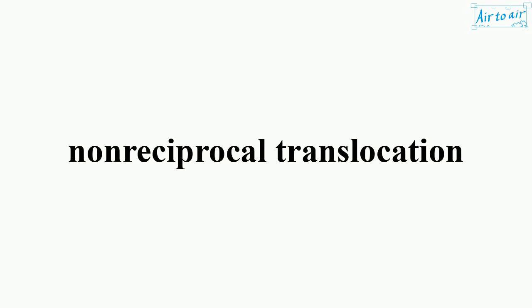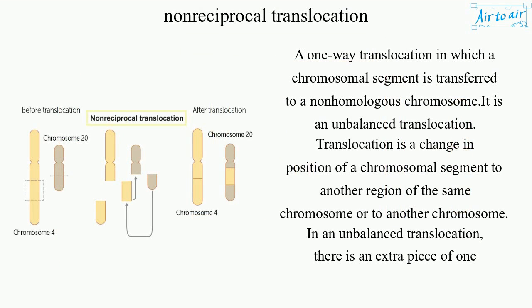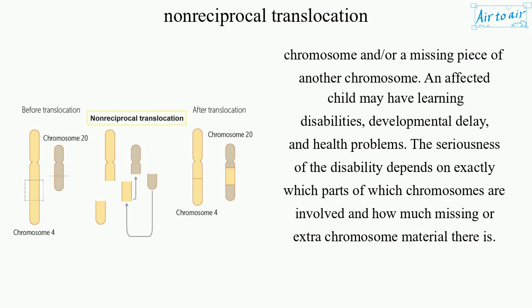Non-reciprocal translocation is a one-way translocation in which a chromosomal segment is transferred to a non-homologous chromosome. It is an unbalanced translocation. Translocation is a change in position of a chromosomal segment to another region of the same chromosome or to another chromosome. In an unbalanced translocation, there is an extra piece of one chromosome and/or a missing piece of another chromosome.